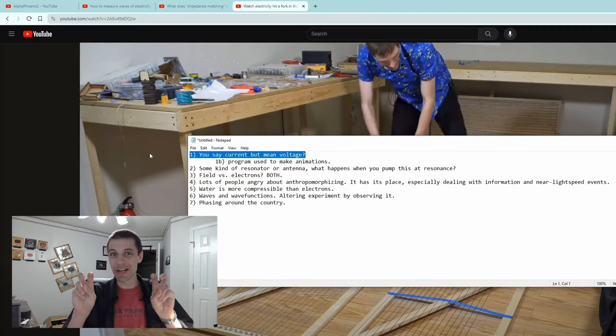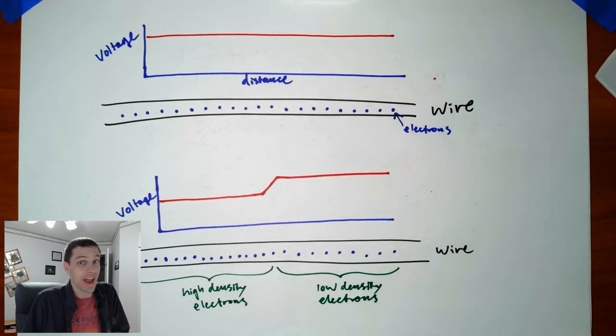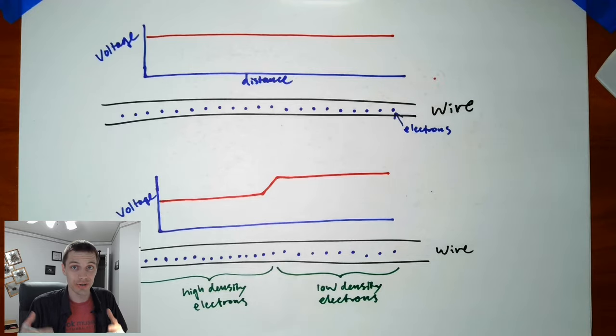First on the list: 'You say current but mean voltage.' A lot of people pointed out that my oscilloscope was measuring the voltage difference between the wires — the potential difference between the two wires of the twisted pair — but I was saying that current was flowing. I want to explain why: I was actually calculating the current that was flowing based on the voltage.